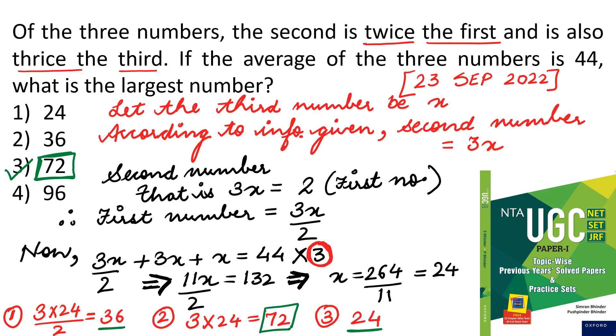So below I have shown you by solving, that when we put the value of x, you will get first number as 36, second number as 72, third number as 24. So, largest number obviously is 72. So, these are very easy questions. On the spot, you have to use a bit of logic. You should not make silly mistakes in these type of questions.